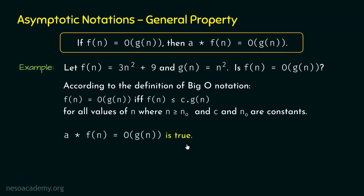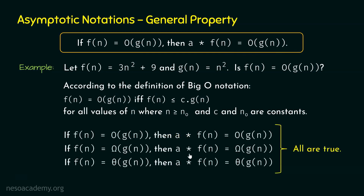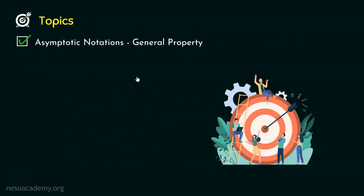So we proved that if F(n) is Big-O of G(n), then A times F(n) is also Big-O of G(n). Not only this — if F(n) is Omega of G(n), then A times F(n) is also Omega of G(n). Also, if F(n) is Theta of G(n), then A times F(n) is also Theta of G(n). You can prove these two properties on your own, though it is not needed because we know constant multiplication does not make much difference. With this, we understood the general property of asymptotic notations.